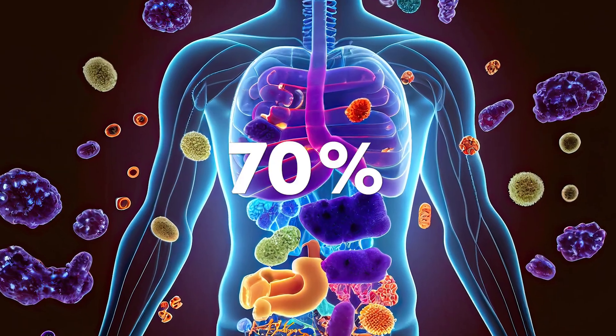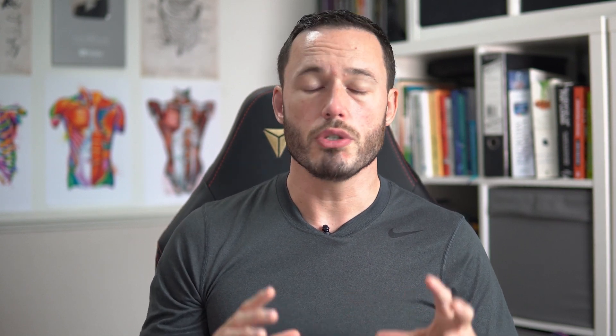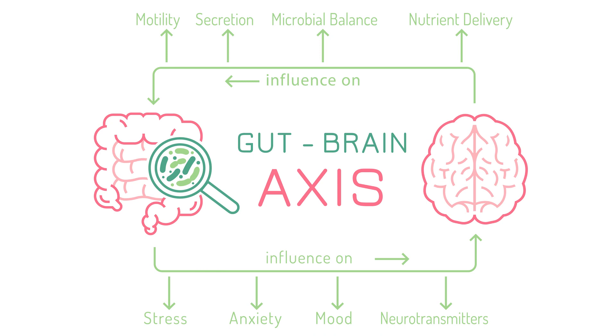Approximately 70% of your entire immune system originates from your digestive system, as well as neurotransmitters like dopamine and serotonin. In fact, around 90% of the entire serotonin levels in your body are produced in your gut, and there's a huge connection between your gut and your brain — this is known as the gut-brain axis.